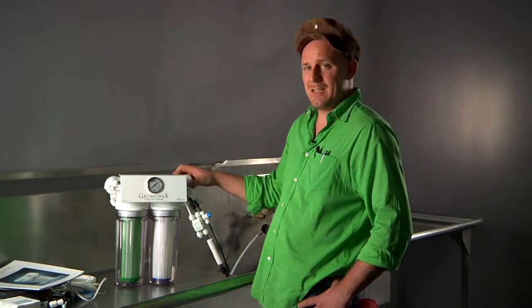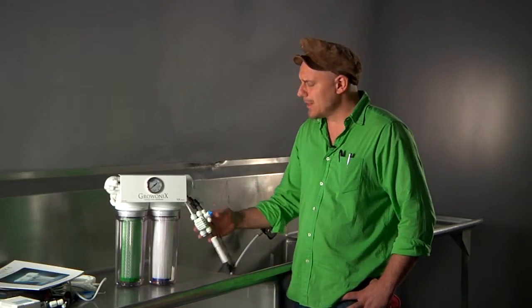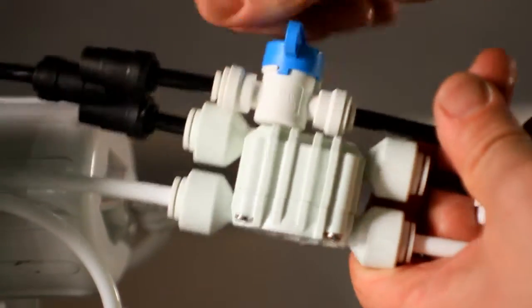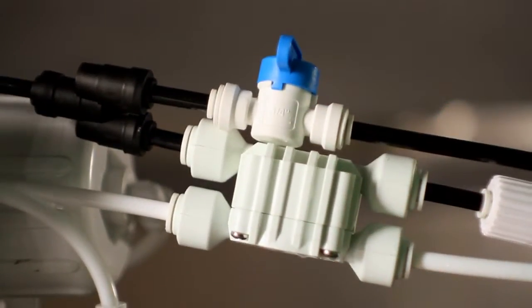So when it's time to change membranes, you only have one to change. And like all of our units, the 150 comes with a manual flush valve to let you purge out pollutants that build up in the membrane, doubling its life.